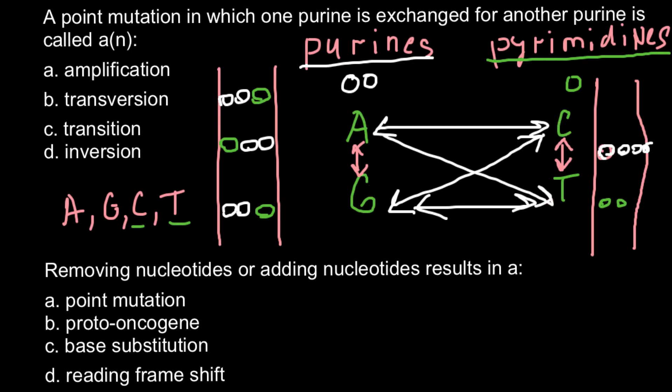So now I think you already know the answer. The answer would be: a point mutation in which one purine is exchanged for another purine is called transition. And this is answer C.